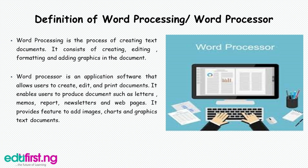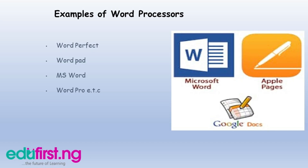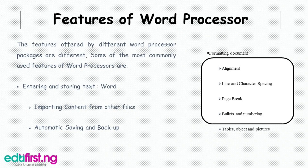A word processor enables users to produce documents such as letters, memos, reports, newsletters, and web pages, and provides features to add images, charts, and graphics. Examples of word processors include WordPerfect, WordPad, MS Word, and Word Pro, amongst others.